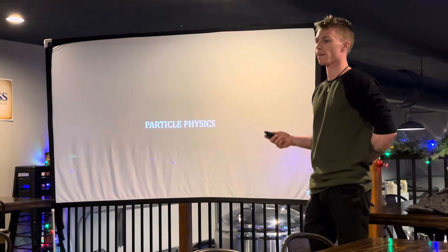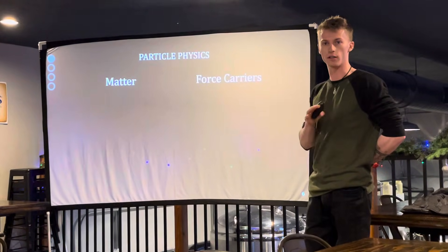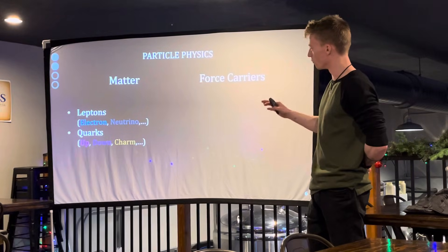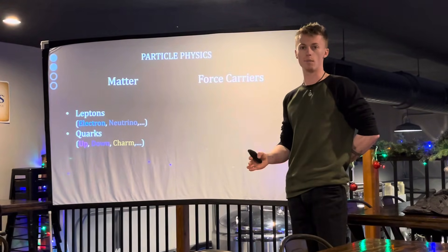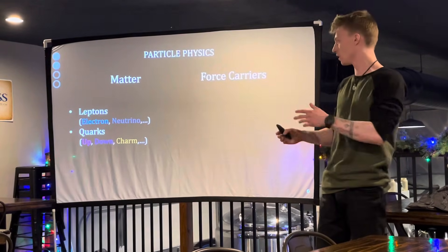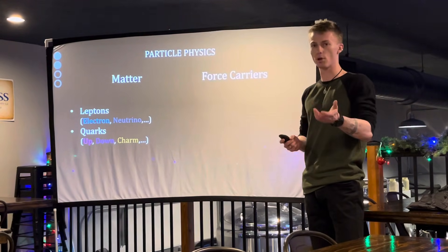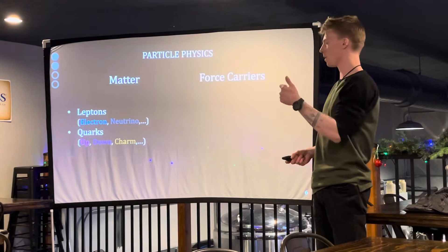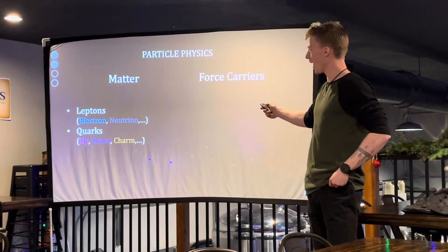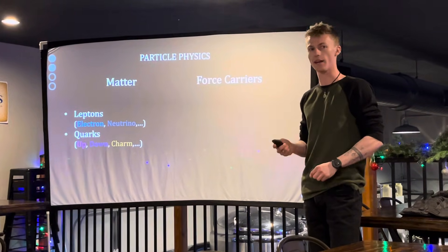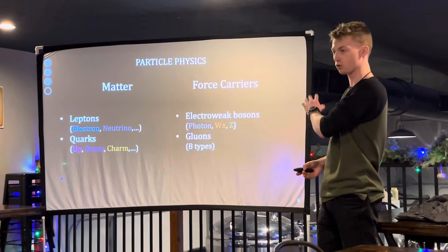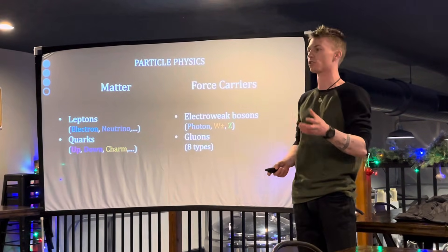Now let's discuss particle physics. There are two main groups of particles: matter particles and force carriers. Matter is made up of things called leptons and quarks. You are familiar with both. Leptons include electrons, but also other things like muons, tauons, and all the different flavors of neutrinos. Quarks make up protons and neutrons. We have matter, but we need matter to be able to interact with itself — that's where force carriers come in. We have the electroweak force and the strong force.